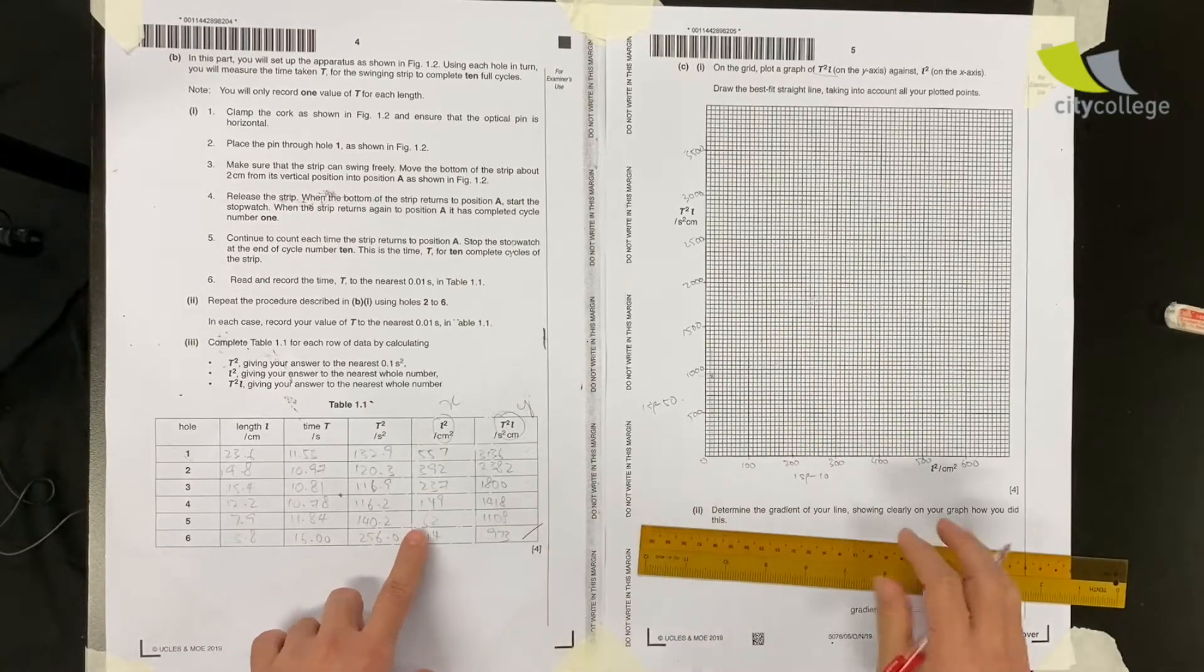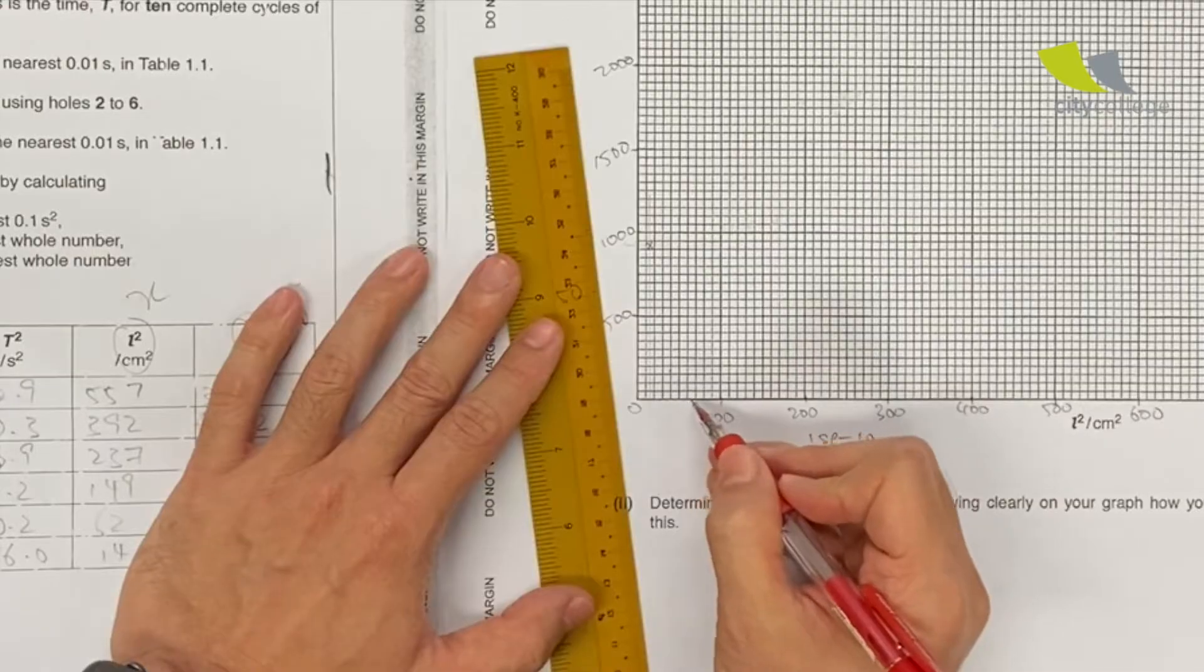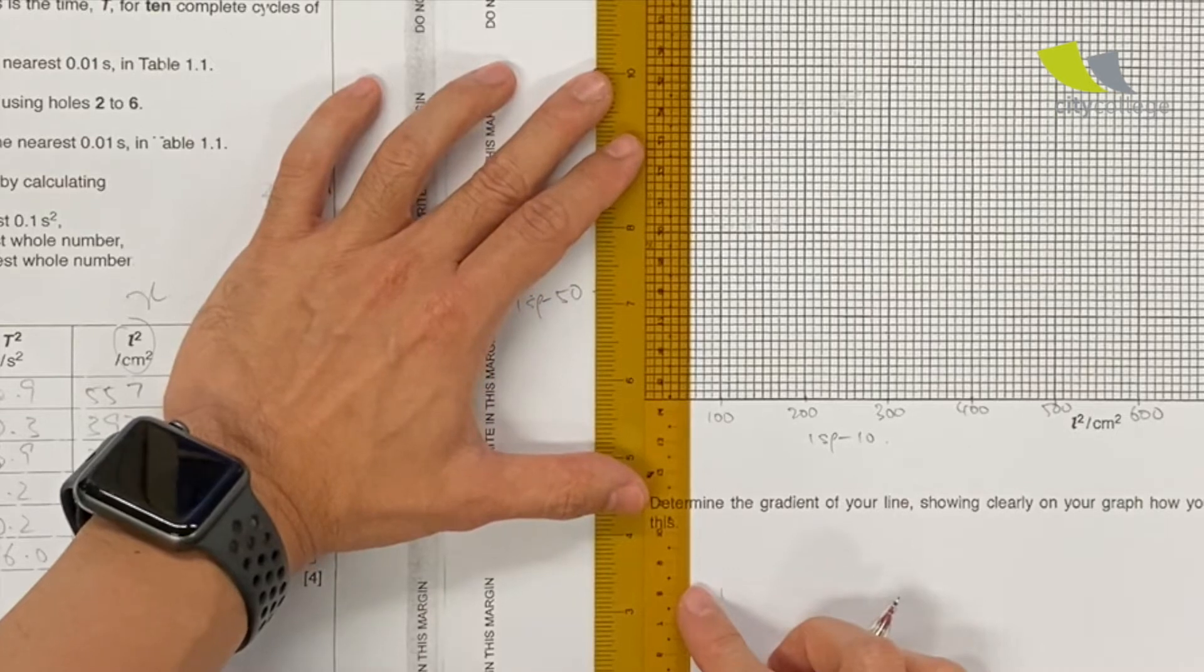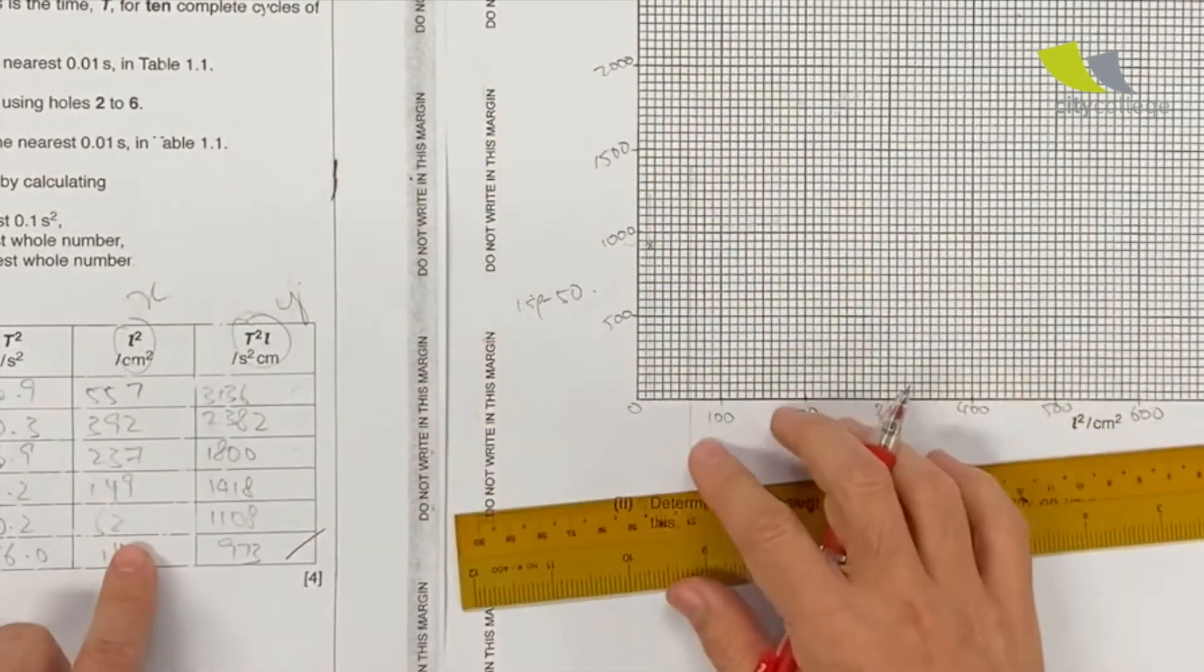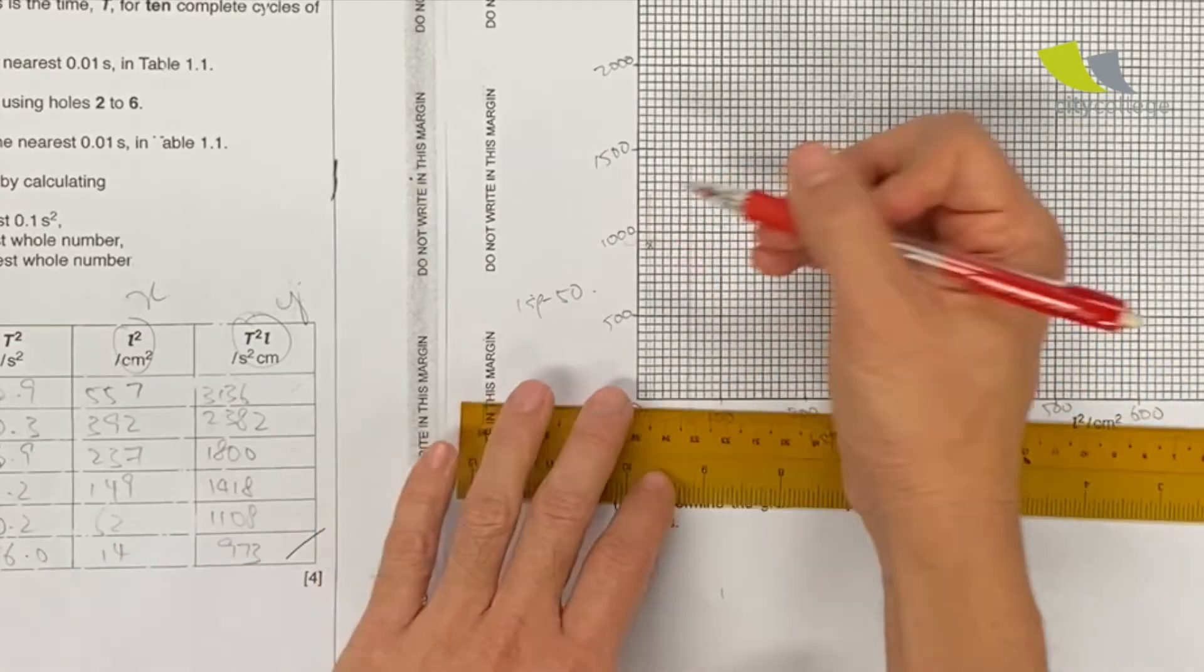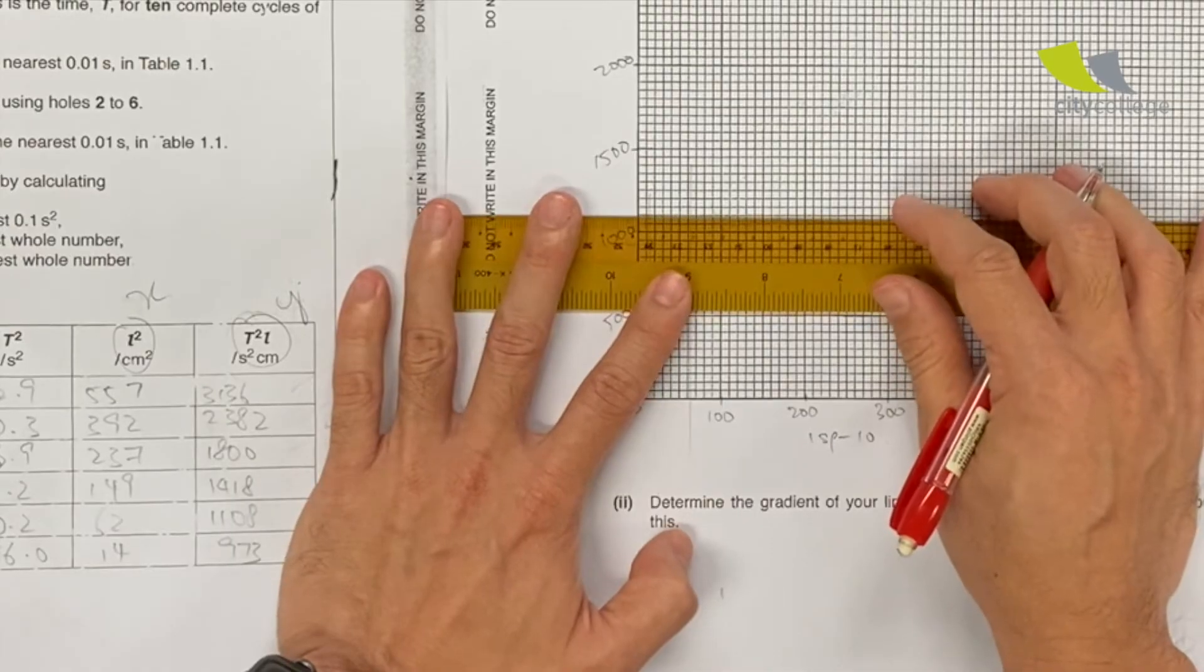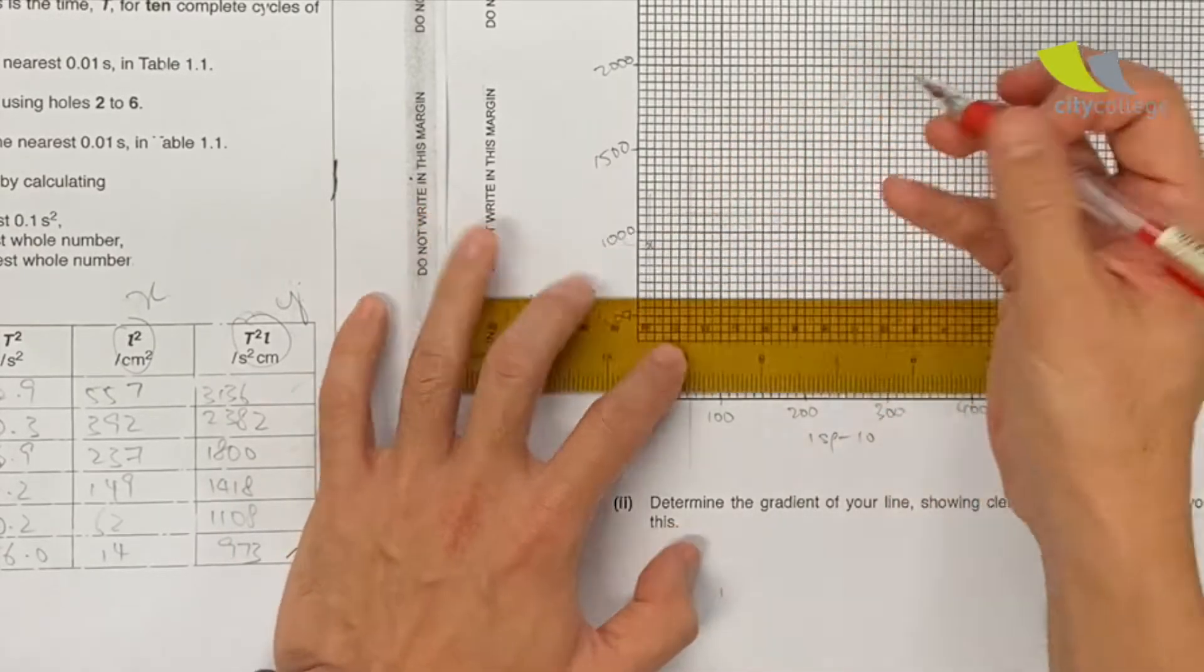Next: 62 and 1108. 62, so 50, 60—62, draw a faint line. And 1108: 1000, 1108, so it's just slightly off. Just draw a faint little line. Mark another cross, so this is done.